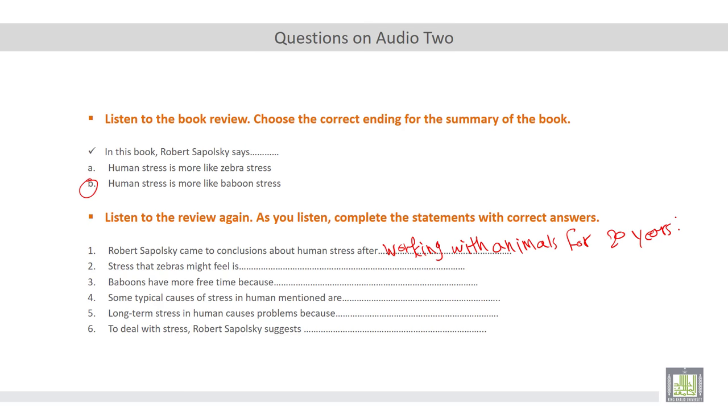Number two, stress that zebras might feel is what do we call the stress felt by zebras. Yes, according to the book, stress that zebras might feel is caused by their being hunted by other animals. So this kind of stress called immediate stress.